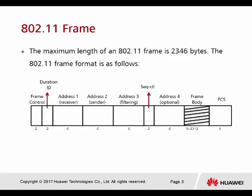This is what the frame looks like for 802.11. The maximum length of an 802.11 frame is 2346 bytes. The 802.11 frame format is as follows. They have 2 bytes for frame control, and another 2 bytes for the duration ID.